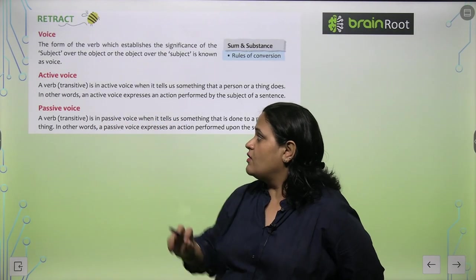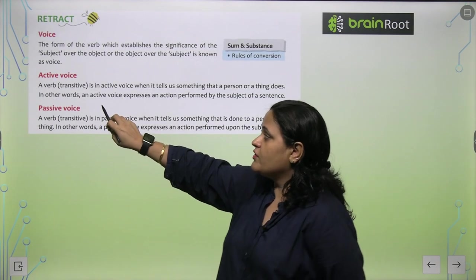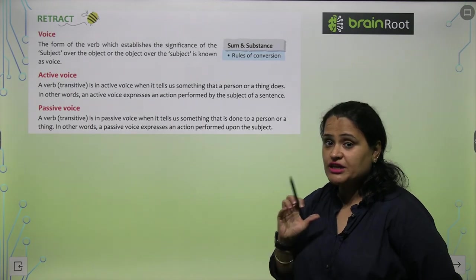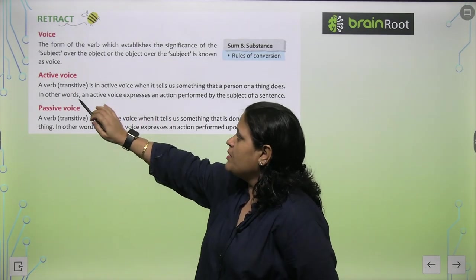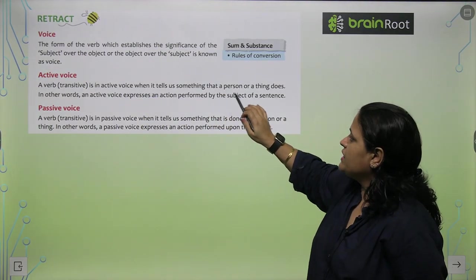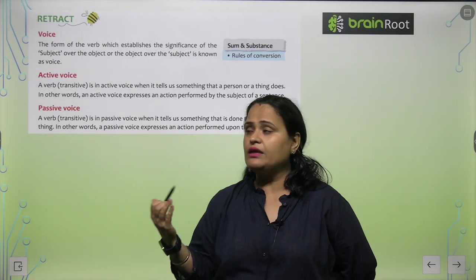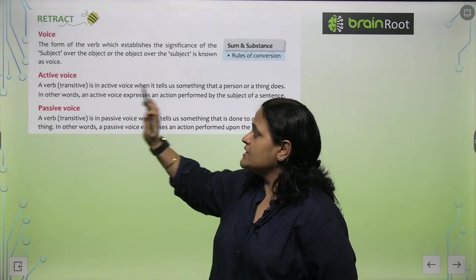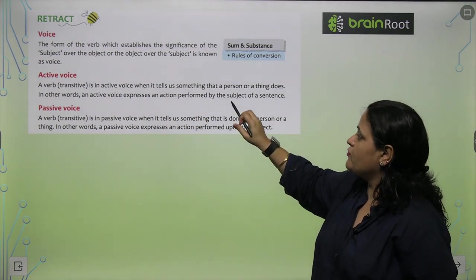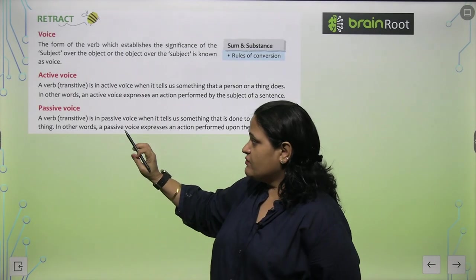Active Voice: a transitive verb — transitive verb jisko object chahiye — is in Active Voice when it tells us something that a person or a thing does. Seedhi seedhi hum koi baat kehte hain, that is called Active Voice. In other words, an Active Voice expresses an action performed by the subject of a sentence.